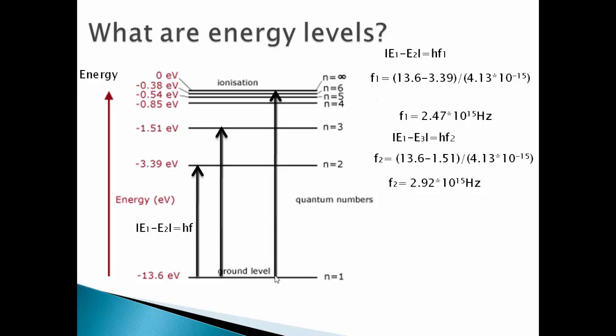Similarly if the electron were to jump from ground level and to leave the atom completely, that means go to the level n equals to infinite, in that case E1 minus E infinity will give us that frequency divide by the Planck's constant. So 13.6 minus 0, we get that frequency as 3.29 times 10 to the power 15 hertz.